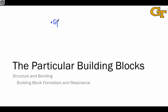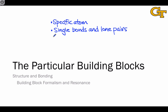Particular building blocks contain a specific atom at the center and clarify the number of single bonds versus lone pairs, as well as the formal charge that results from the specific atom and the number of formal electrons located at it. We've seen a lot of these already. What I want to do in this video is move from the generalized building blocks to the particular building blocks.